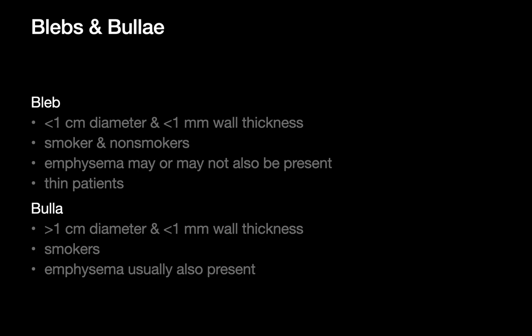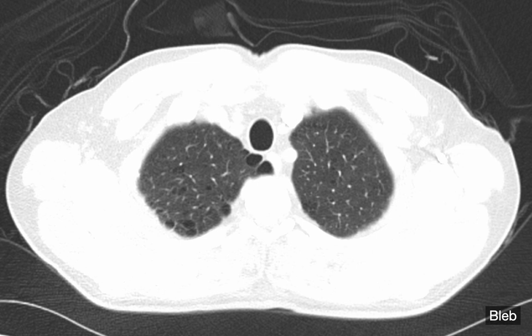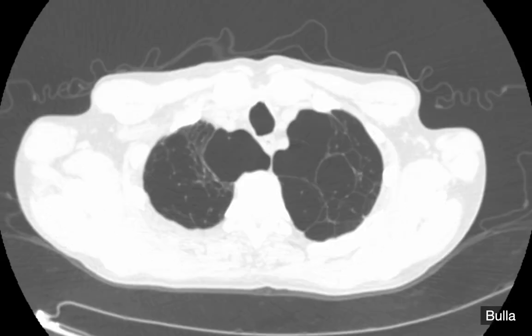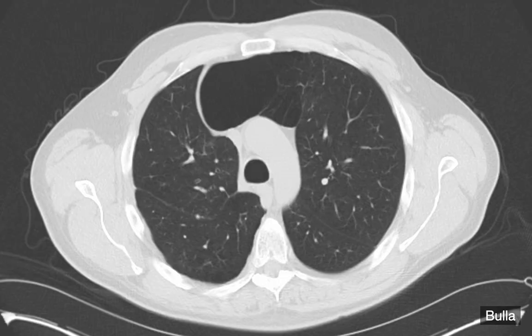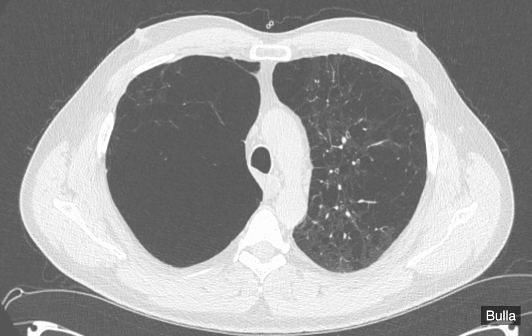The population with blebs is somewhat broader. You'll see nonsmokers with blebs, whereas bullae are generally not seen in nonsmokers. For example, blebs are not uncommon in younger, thin patients. CT examples show superficial blebs just beneath the visceral pleural surface, and cases of large bullae as well.